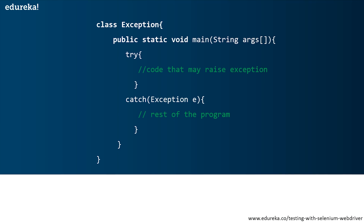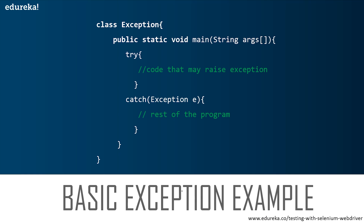Now let's understand the basic syntax of a Selenium exception. You will create a class, and inside the main method you will write a try block where you place the code that can raise an exception. Inside the catch block, you write the code to execute when that exception is raised. The code that throws an exception is included in the try block, and to continue with the normal execution flow, it will be handled in the catch block.